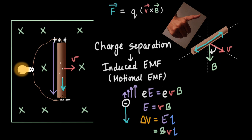When an electron leaves the lower end, the force due to the electric field weakens slightly because the electric field strength E itself decreases slightly as some charge leaves. So the force on the electron is almost — but not exactly — balanced, and that lets the Lorentz force push more electrons down to the lower end of the rod. Those electrons then complete the entire journey through the circuit.